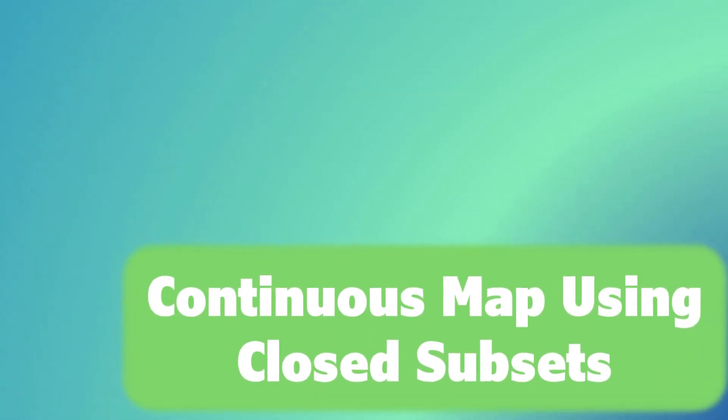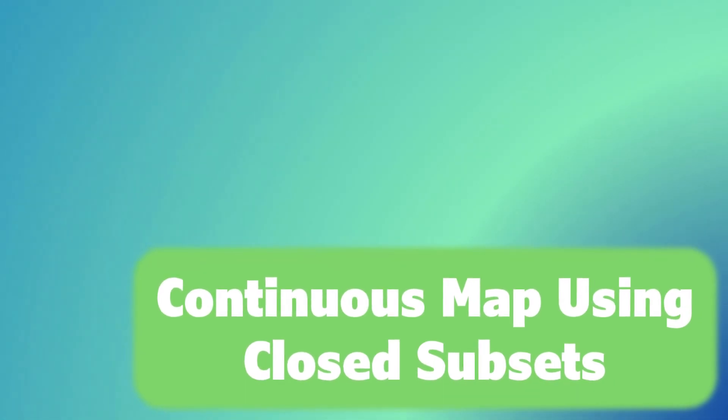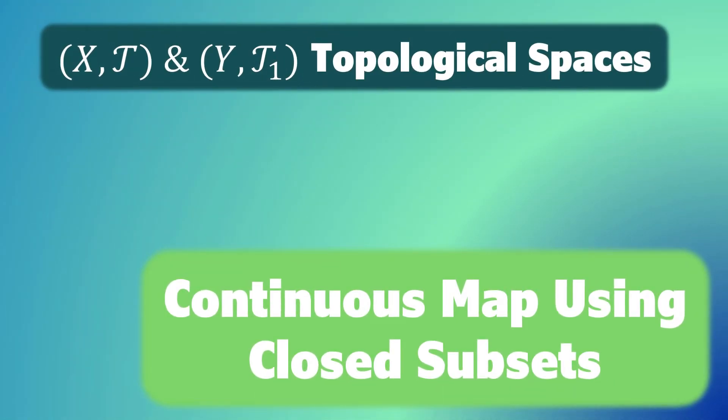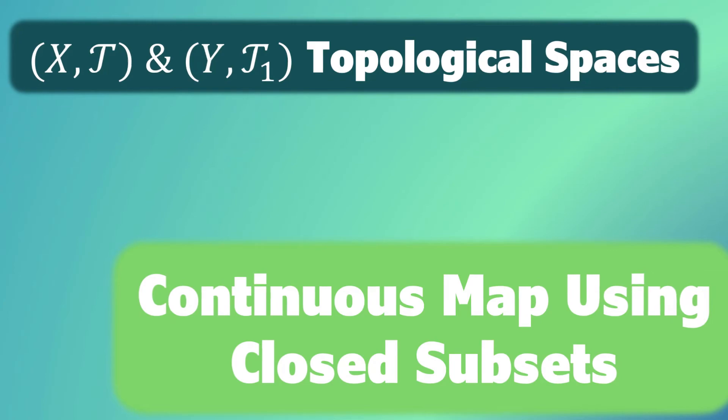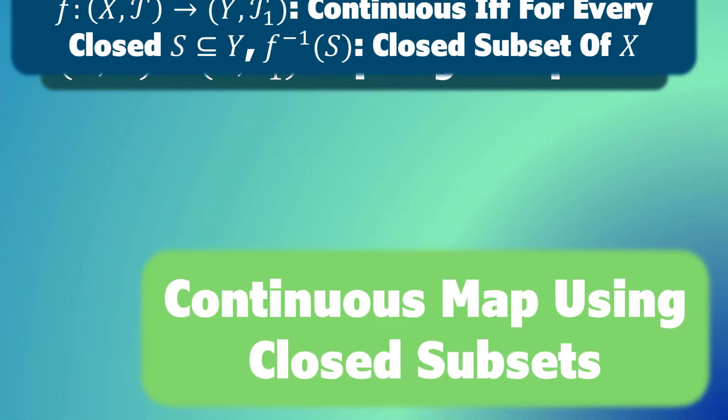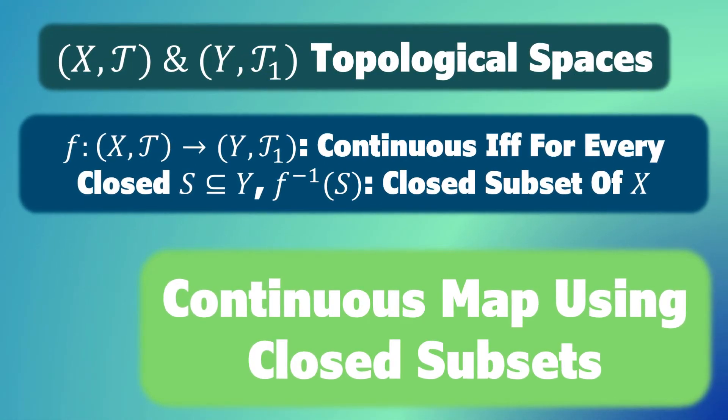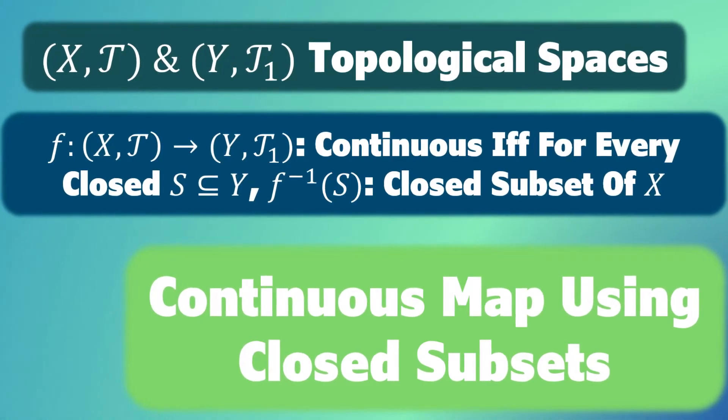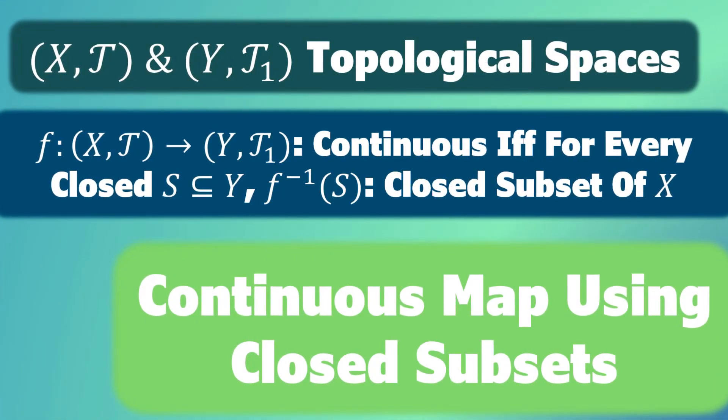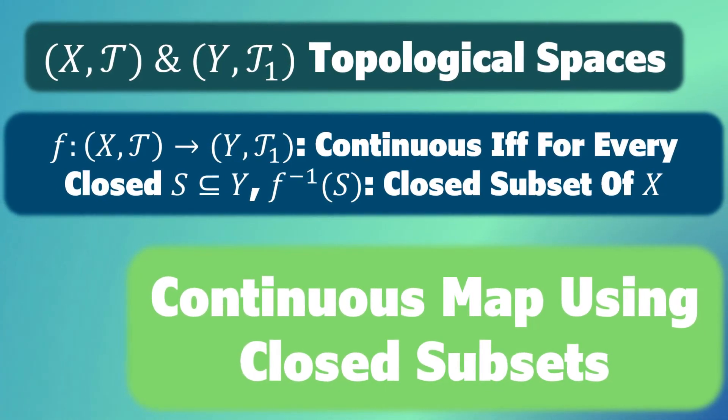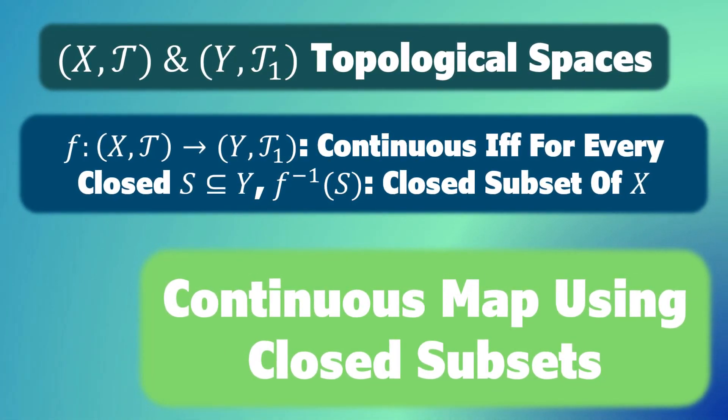Also, we can define a continuous map using closed subsets. Let (X, T) and (Y, T₁) be topological spaces. Then, f: (X, T) → (Y, T₁) is continuous if and only if for every closed subset S of Y, the inverse image of S is a closed subset of X.